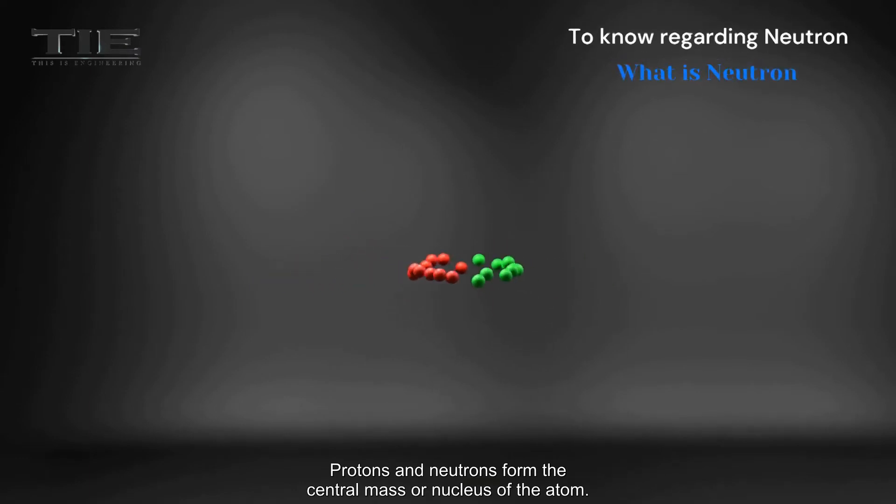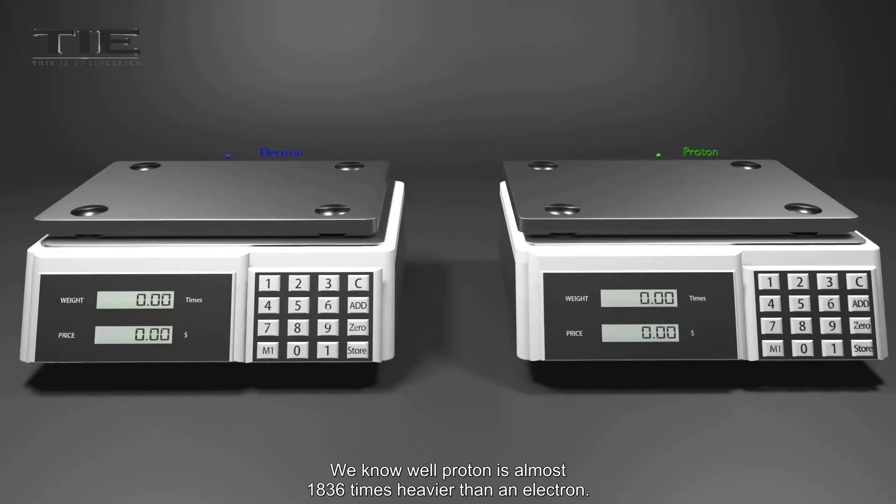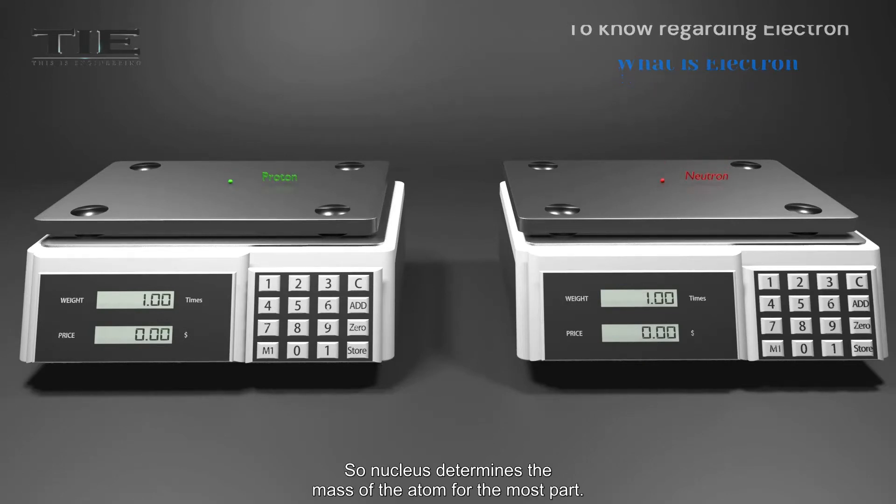Protons and neutrons form the central mass, or nucleus of the atom. We know well, protons are almost 1836 times heavier than electrons. Neutrons and protons have nearly the same mass. So the nucleus determines the mass of the atom, for the most part.